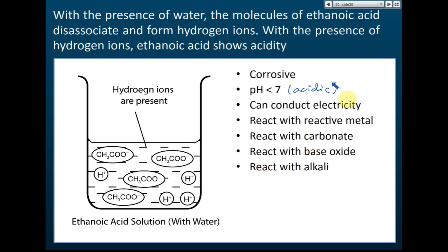An acid without water can be solid, liquid, or gas — it depends on the acid. Ethanoic acid at room temperature without water is a liquid. Sulfuric acid without water is a solid. Hydrochloric acid — HCl — is a gas at room temperature. If it's dry HCl, it does not show acidity. So it depends — an acid can be liquid, gas, or solid at room temperature if it does not dissolve in water.